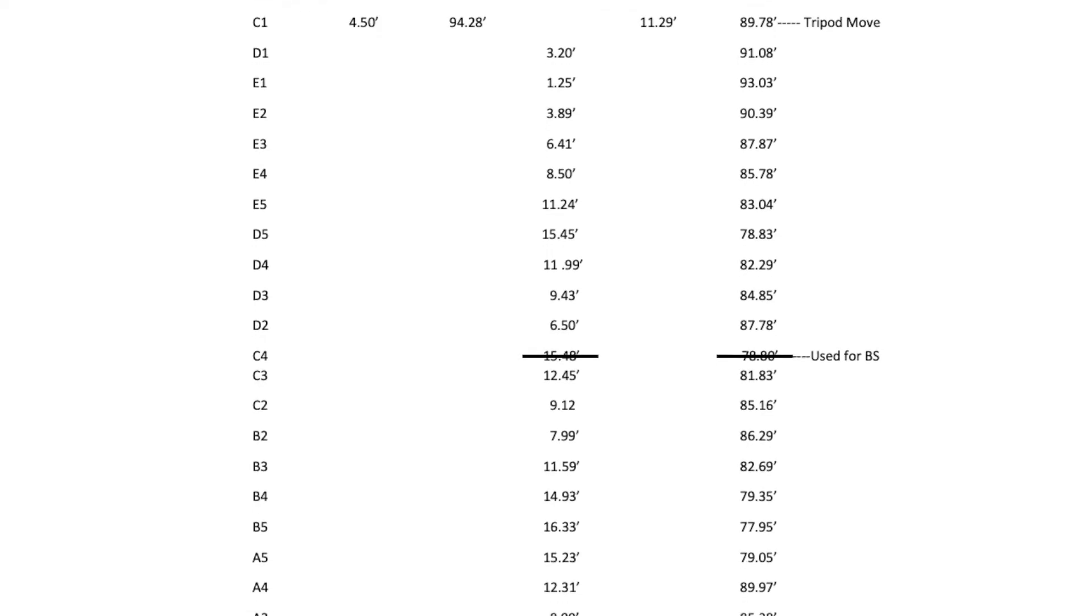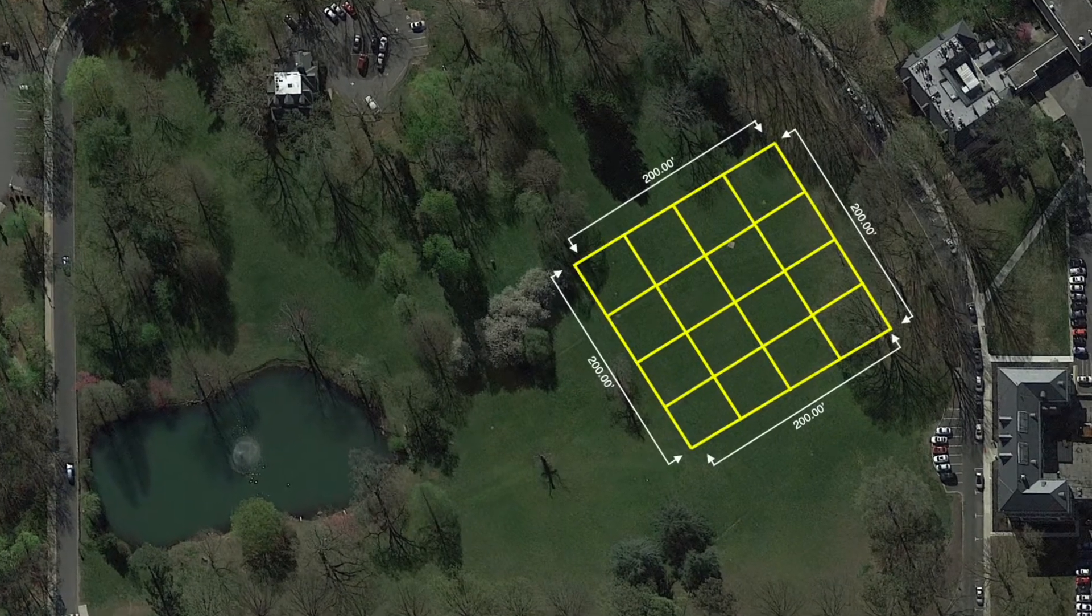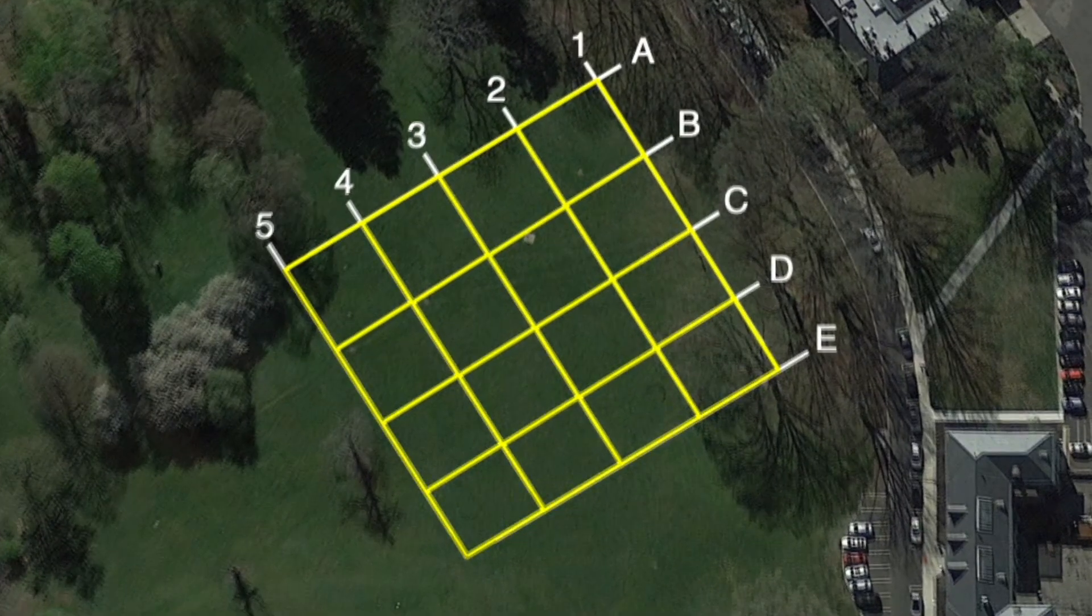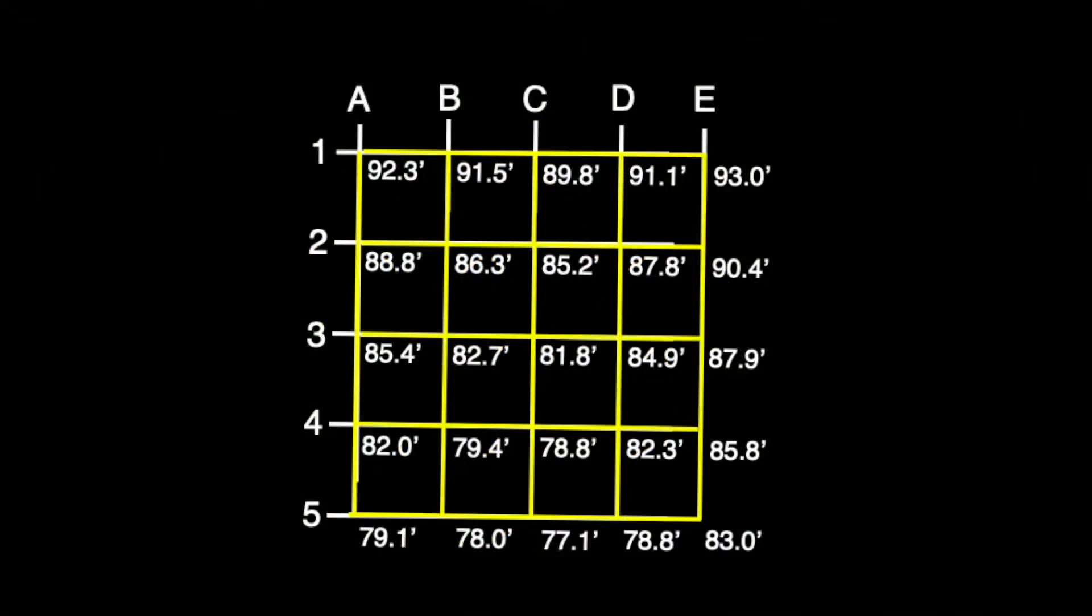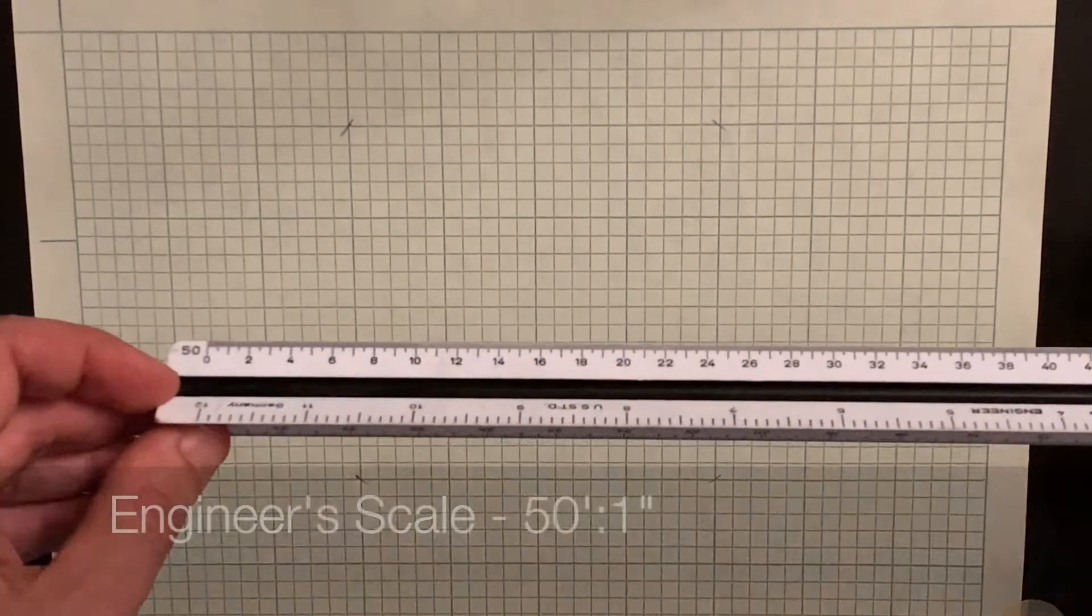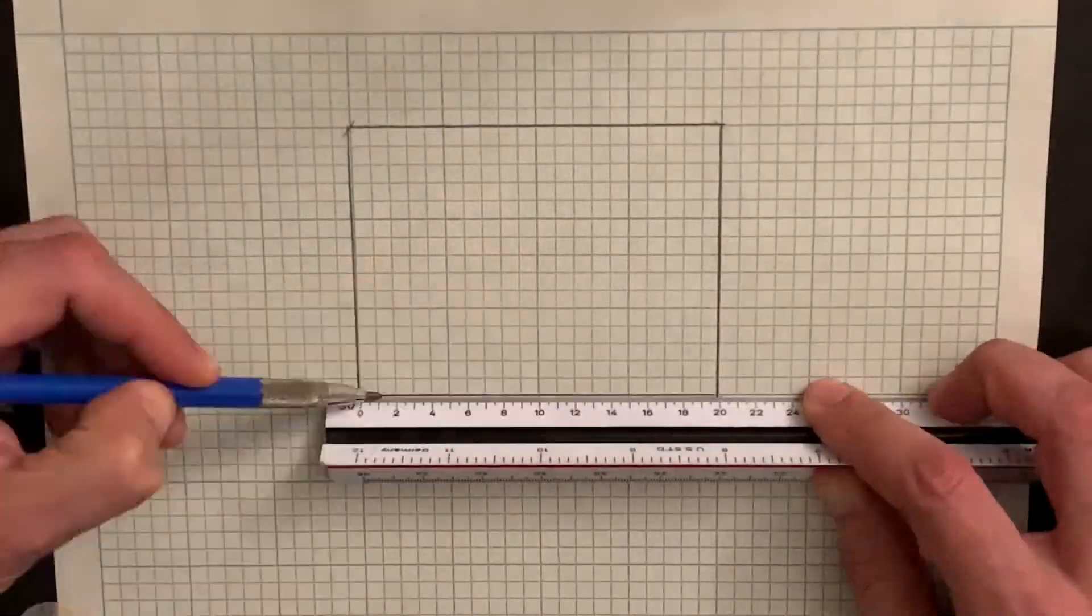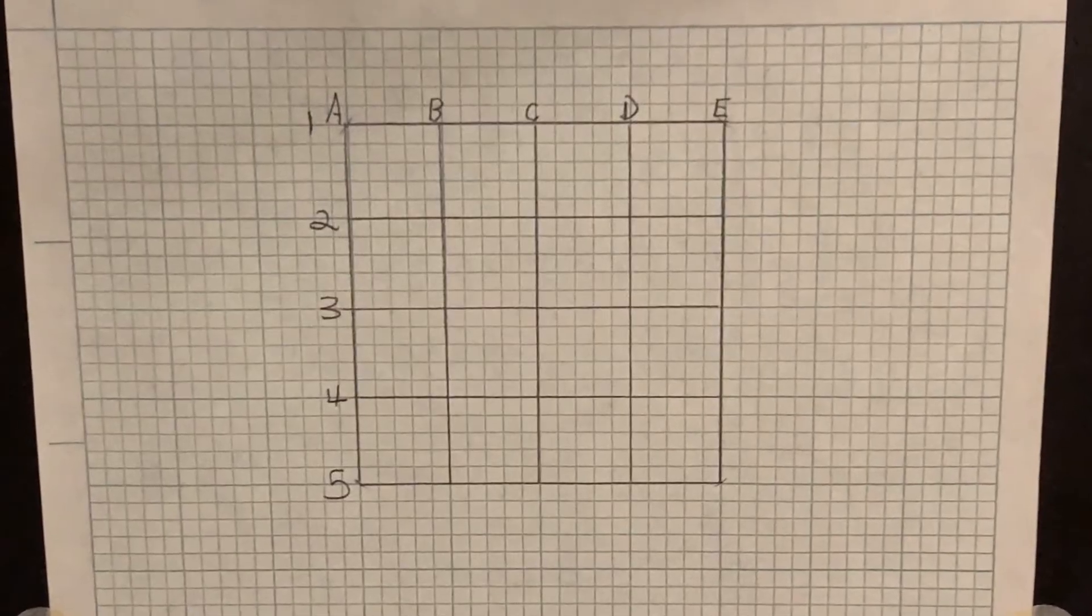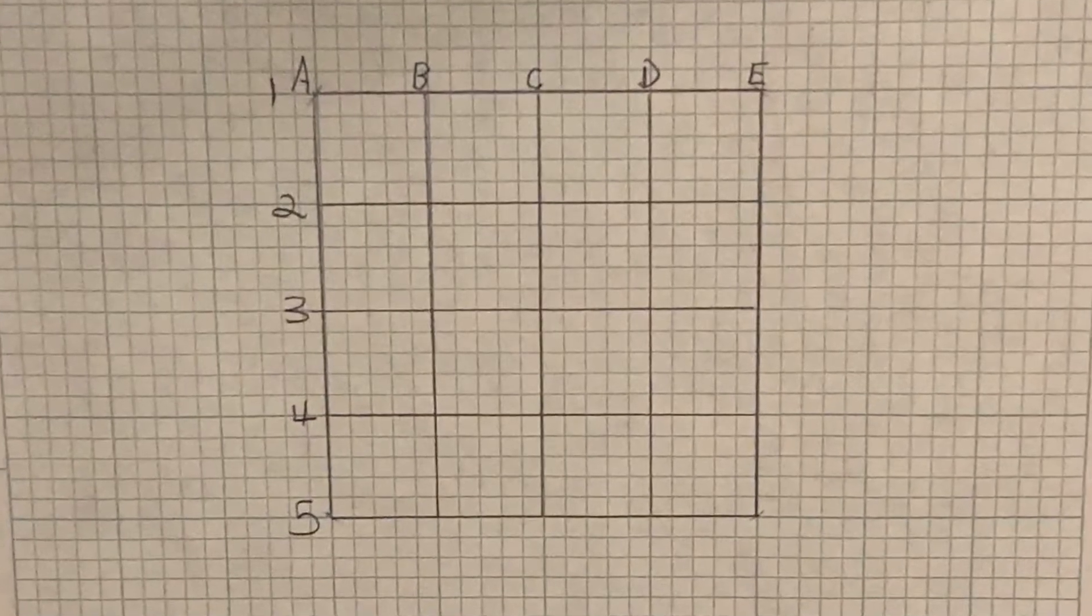Before we get into interpolation though, let's take a quick look at our grid elevations and how they transfer to points on a page. Using an engineer's scale on 5 by 5 graph paper, I've recreated our 50 foot grid squares as we laid them out in the field.